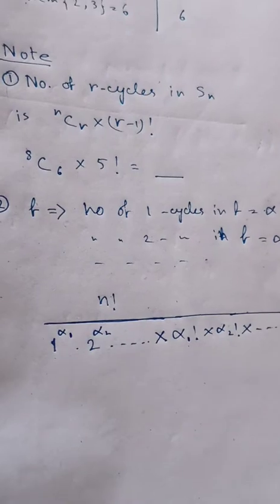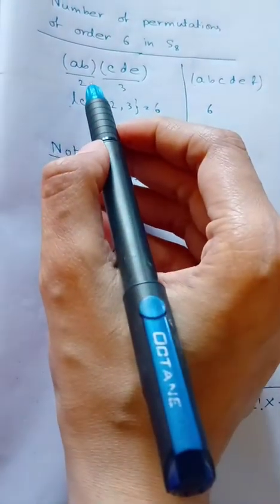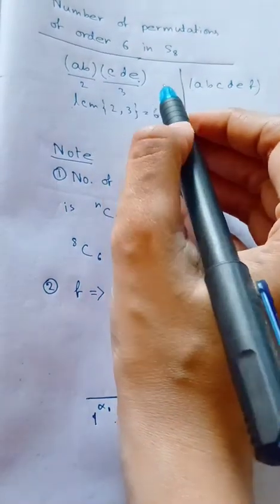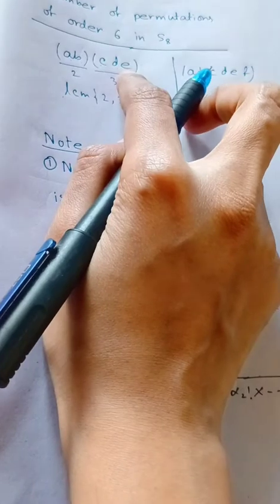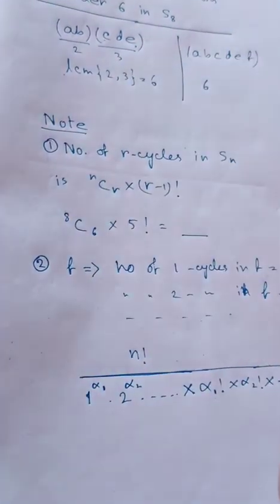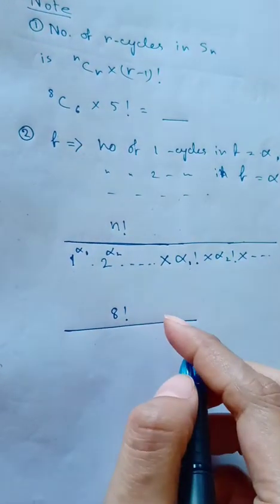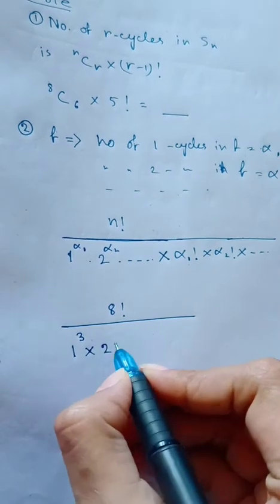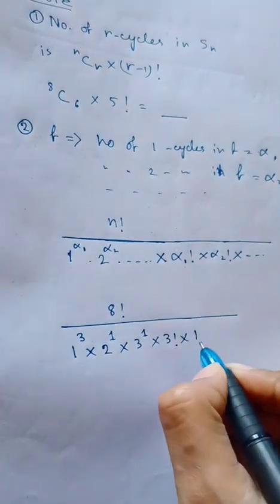Let me give an example to clarify. For the first-type permutation (ab)(cde) in S₈, there are 1, 2, 3, 4, 5 elements used, so the number of 1-cycles is 8 − 5 = 3. There is 1 two-cycle and 1 three-cycle. So the number of such permutations is 8! divided by (1³ · 2¹ · 3¹) times (3! · 1! · 1!).